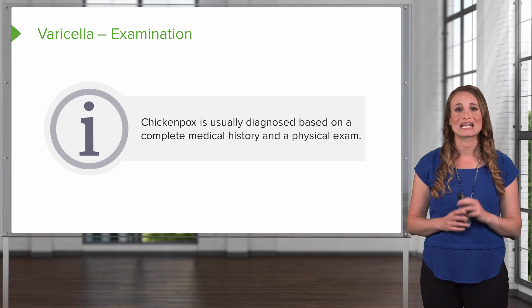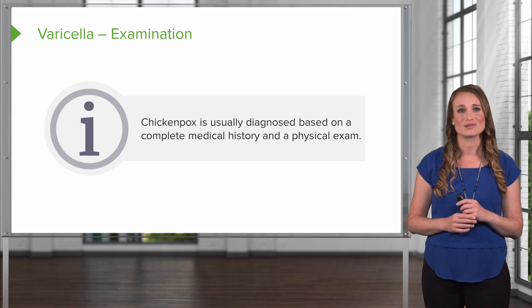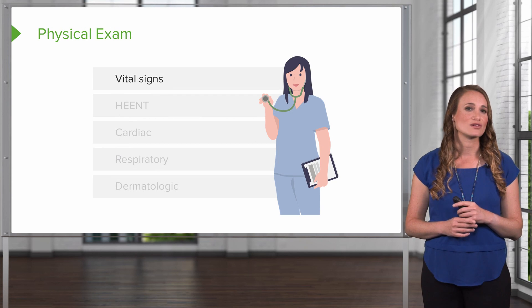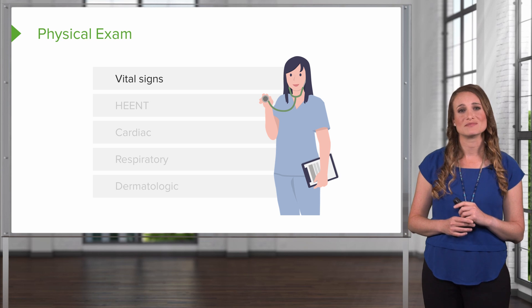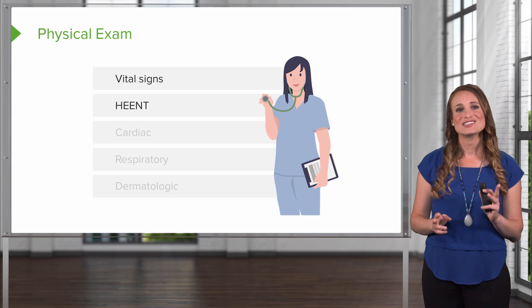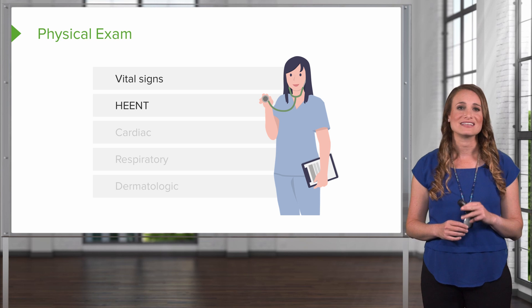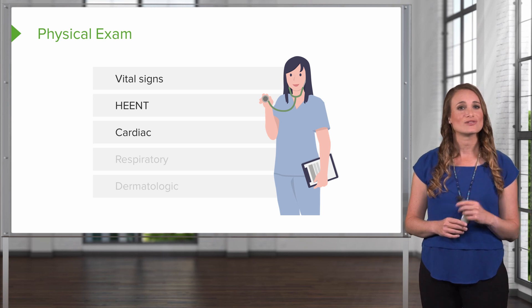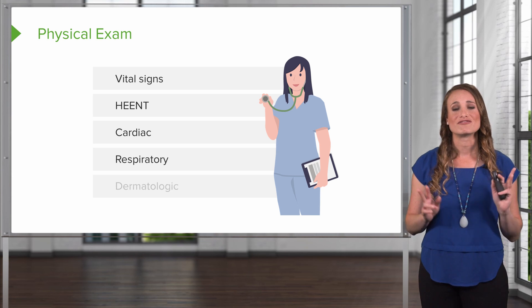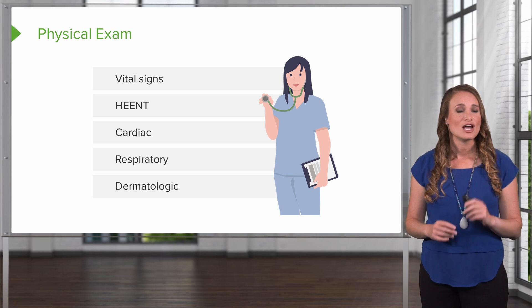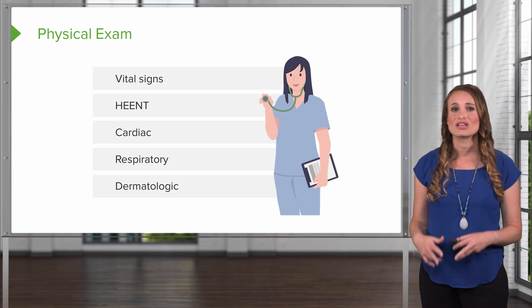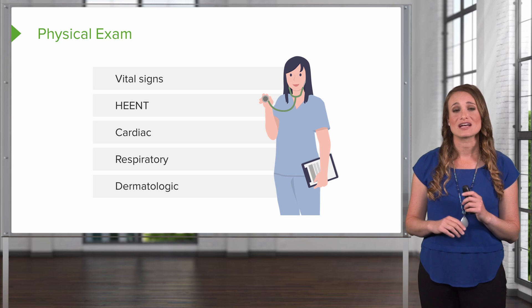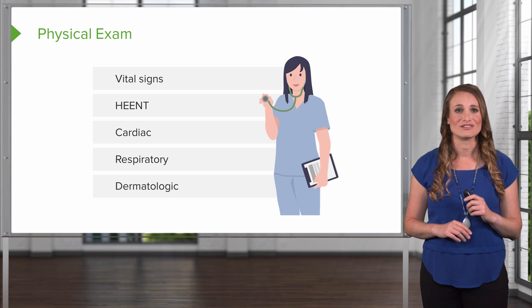Chicken pox is usually diagnosed based on a complete medical history and a physical exam. Start with the vital signs — these are usually normal when your patient comes in with chicken pox. Next, perform a thorough head, eyes, ears, nose, and throat exam. Then do a cardiac and respiratory exam. Finally, check the skin, looking for all different lesions, whether they're raised or tender, and looking for signs of secondary bacterial infection.